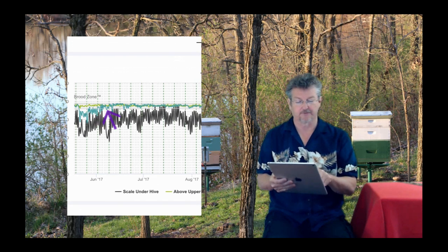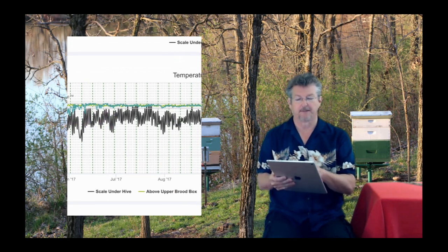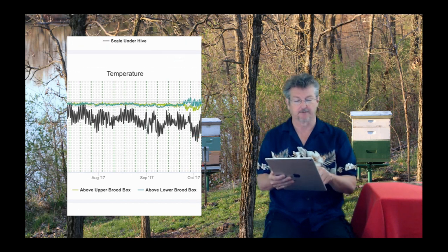Then as a couple of weeks go by, the lower brood box also comes into regulation. The black line is the outdoor temperature so you can see how well they're regulating.